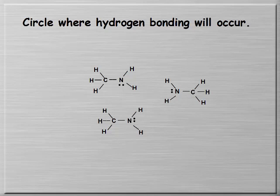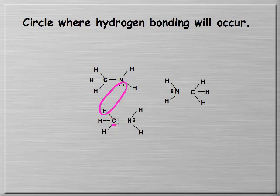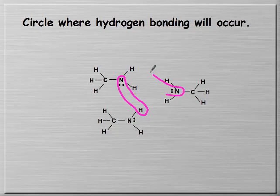Hydrogen bonding is not between nitrogen and hydrogen within the same molecule—that is a covalent bond. You also can't have a nitrogen attracted to a hydrogen attached to a carbon. It's got to be a nitrogen of one molecule attracted to the hydrogen of another molecule, or this nitrogen attracted to that hydrogen—those would be two examples.